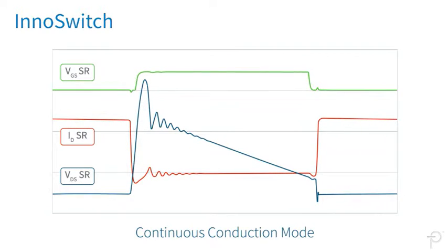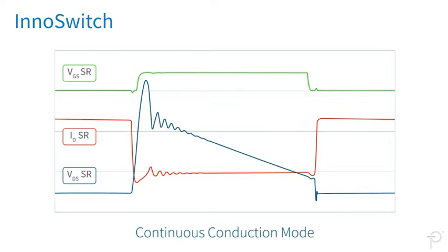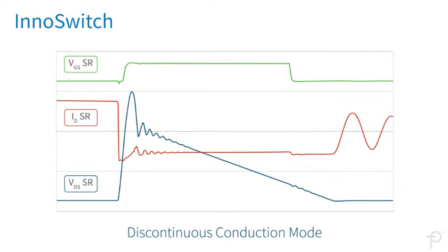Unlike typical synchronous rectification circuits, designs using the InnoSwitch family can operate in both continuous and discontinuous conduction modes.